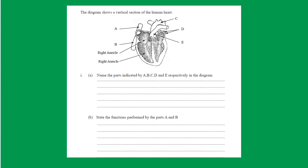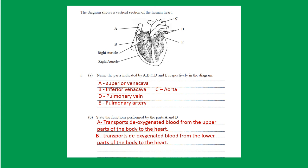Now refer to this question. Read the question well and write your answers. The diagram shows a vertical section of the human heart. Name the parts indicated by A, B, C, D, and E. A is the superior vena cava, B is the inferior vena cava, C is the aorta, D is the pulmonary vein, and E is the pulmonary artery. State the functions performed by parts A and B: A transports deoxygenated blood from the upper parts of the body to the heart; B transports deoxygenated blood from the lower parts of the body to the heart.